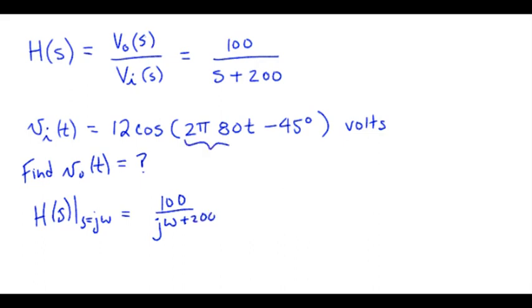The specific value that we need is right here, omega is 2 pi 80, which is 503 radians per second. So we stick that in right here, and that gives us 100 over 200 plus j503.